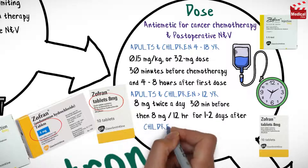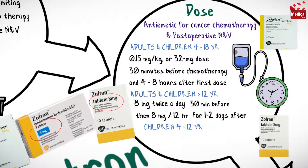For children from 4 to 12 years, the usual oral dose is 4 mg 3 times per day, with the same dosing regimen as for adults.